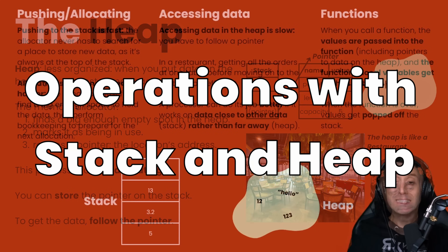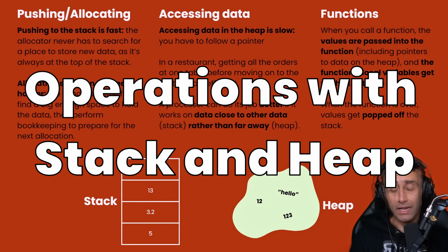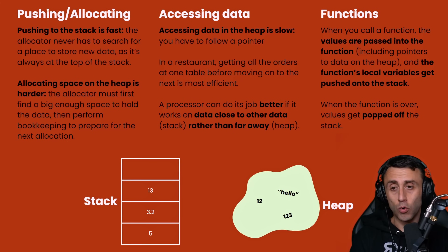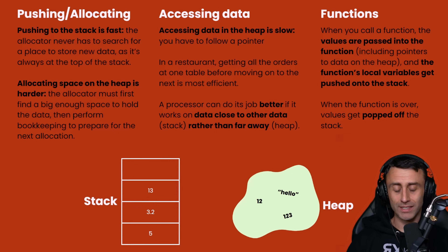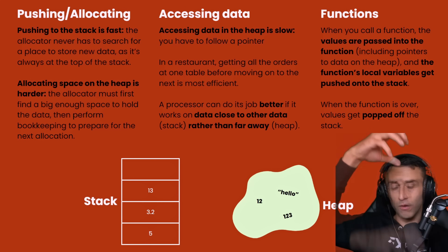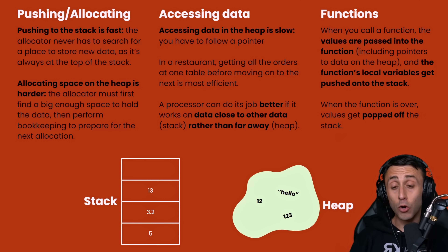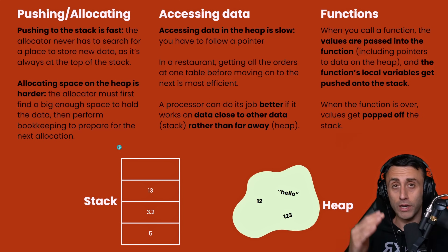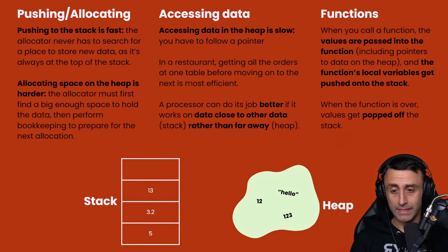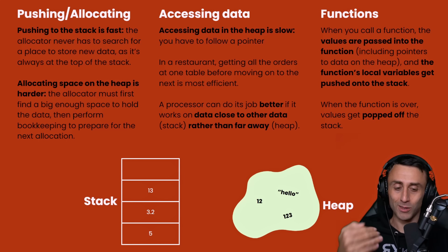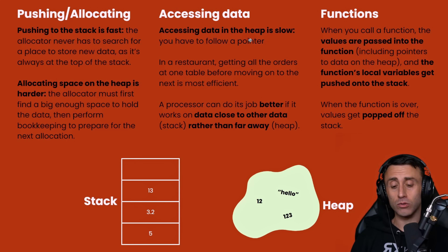Regarding performance: pushing to the stack is really fast — it's just putting a new plate on top of the pile, and the allocator never has to search for a place. Allocating space on the heap is usually harder: the allocator must first find a big enough space, perform bookkeeping, and prepare for the next allocation that will come after.